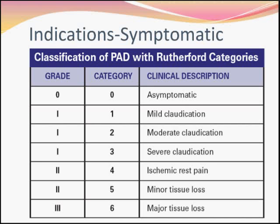The choice of treatment would depend upon the Rutherford classification. Category 0 is a patient with no symptoms; 1 is mild claudication; 2 is moderate claudication; 3 is severe claudication — a patient who finds it difficult to carry on with normal activities; 4 is rest pain; 5 is minor tissue loss; and 6 is major tissue loss.